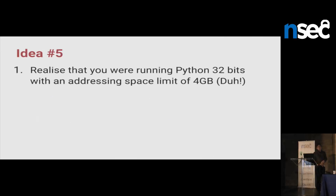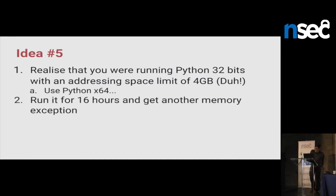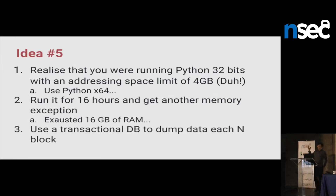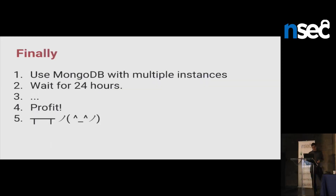Idea number five: realize that you were running Python 32-bit with a space limit of 4 gigs. Decide to use Python 64-bit. Running for 16 hours straight and get another memory exception — this one was real. I exhausted my RAM on my laptop plus my swap file. So: use a database, dump to DB every 1000 blocks, then merge with the DB. But my traditional DB just died. Finally, I was able to use MongoDB with multiple instances, inserting each 1000 blocks into the DB. Wait for 24 hours. And finally I was able to make it work.